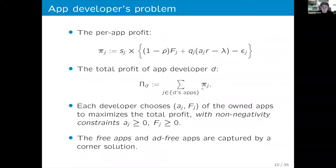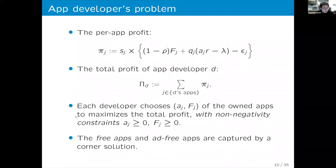Each developer simultaneously chooses aj and fj for all their own apps to maximize total profit, subject to non-negativity constraints on aj and fj. In this framework, free apps and ad-free apps are simply captured by corner solutions with respect to these non-negativity constraints.